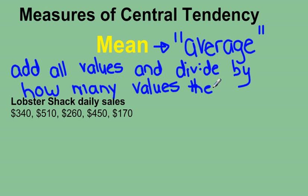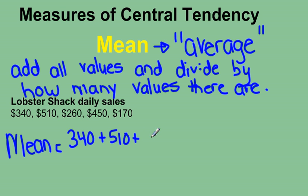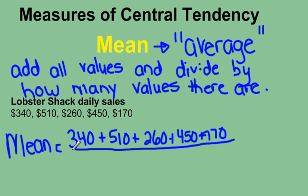Let's look at this example. They give us the daily sales for the lobster shack — five values. If we were to find the mean, we would add these up: 340 plus 510 plus 260 plus 450 plus 170, and divide by how many there are — five.